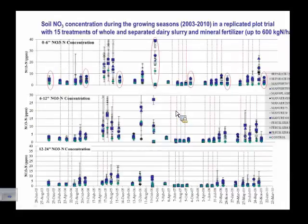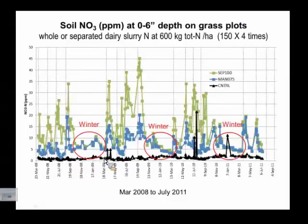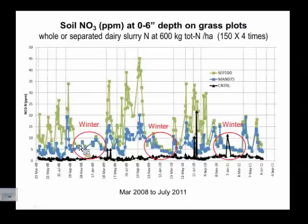This set of samples from the same trial, showing 2008 to 2011, has the wintertime data circled. This is just 0 to 6 inches and is associated with our nitrous oxide measurements. The black is the control — grass with no nitrogen. Even with no nitrogen there is some nitrate; it's not zero, but very low, and it occasionally spikes. It could be some freeze-thaw cycles. But you can see there is a residual effect from the manure application. The green is separated liquid manure and the blue is whole manure.